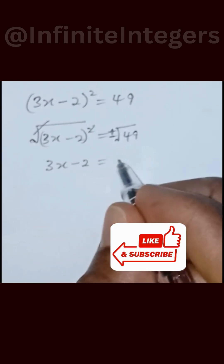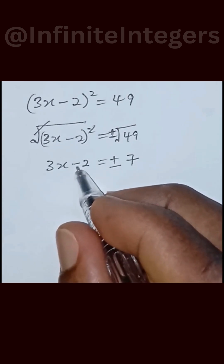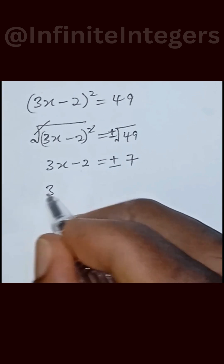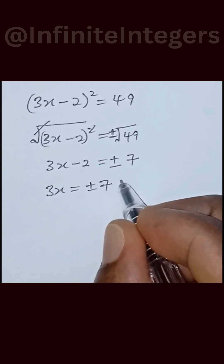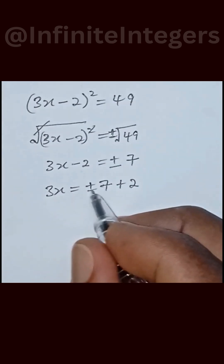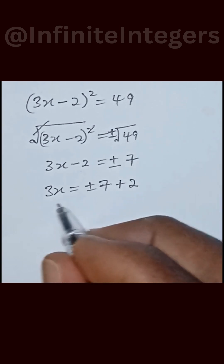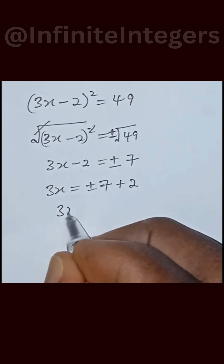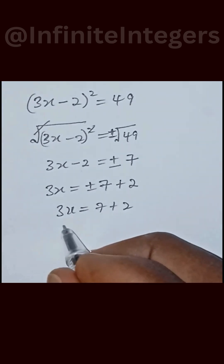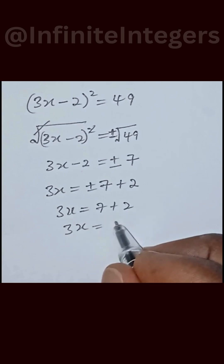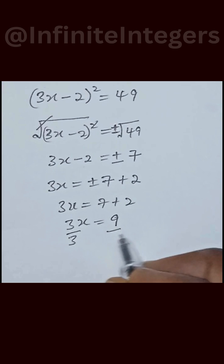So we have 3x minus 2 equal to plus or minus 7. Then we can move the 2 to the right hand side. We have 3x equal to plus or minus 7 plus 2. We can solve this for the value of x with plus and minus. First we have 3x equal to 7 plus 2.